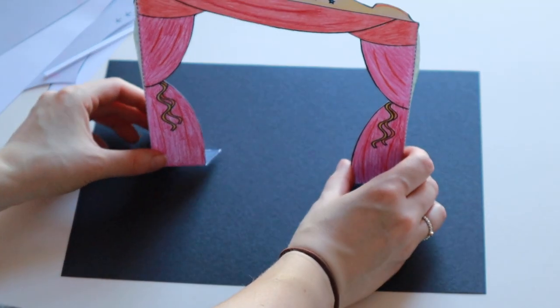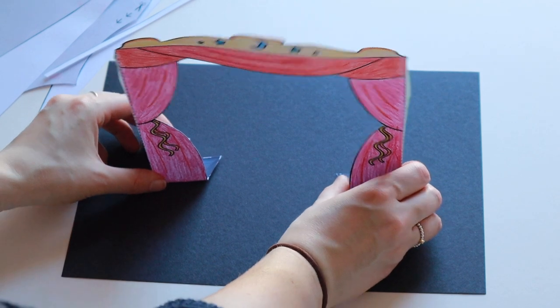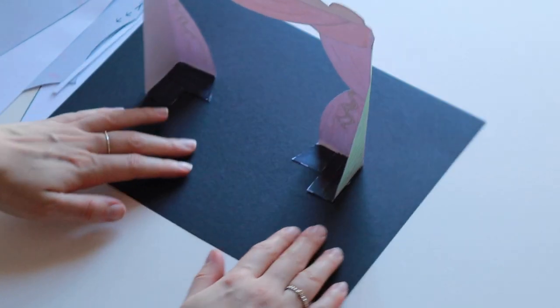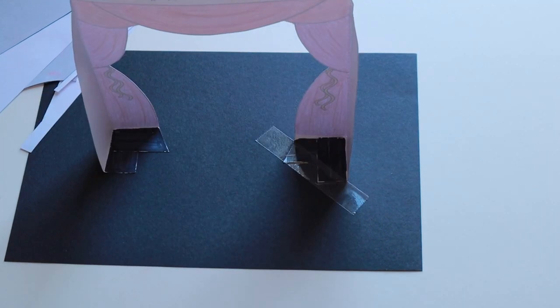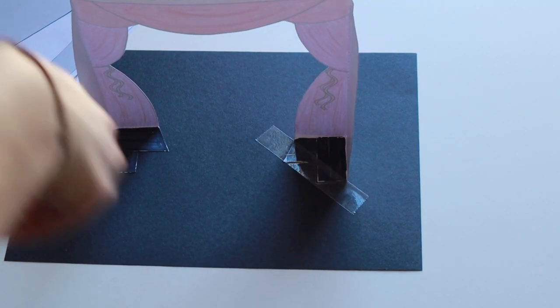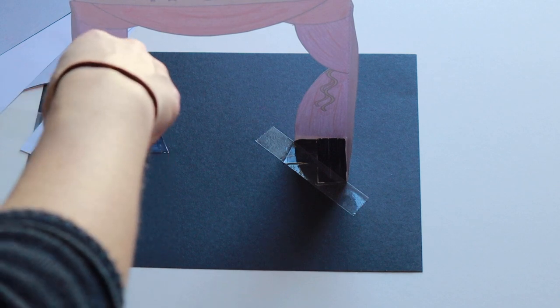I have coloured in the top of my tabs with black felt tip pen to disguise them on the base, but you don't have to do this. If you don't have glue you can use sellotape instead, or you might want to do both for extra strength.